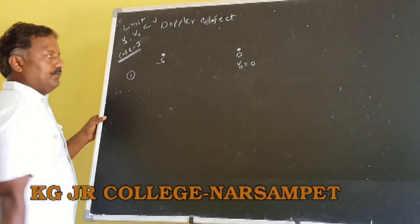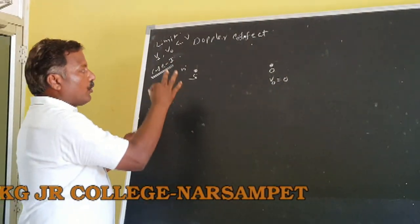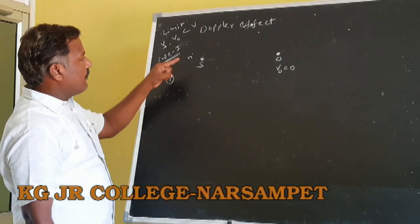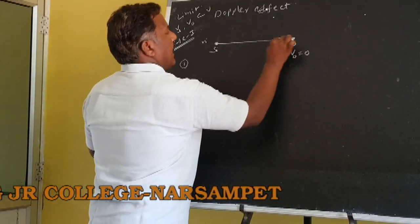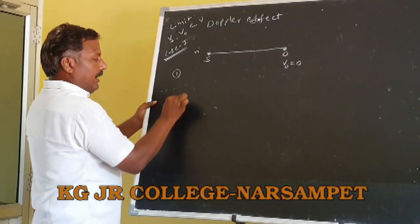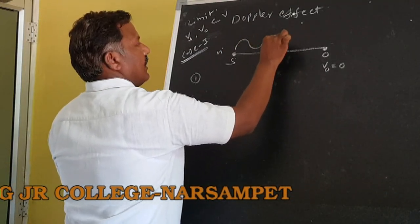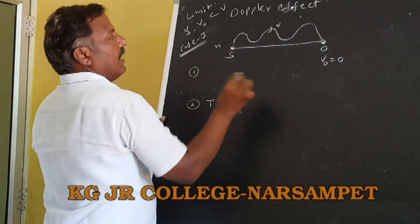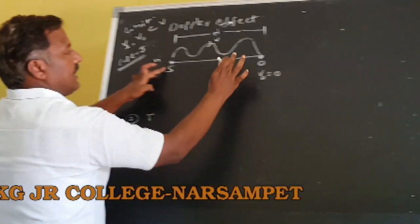The frequency of source is N, so the source produces N number of waves in one second. If the time period is T, the source produces one sound wave travelling with velocity V, covering a distance lambda. The distance between source and observer is lambda.